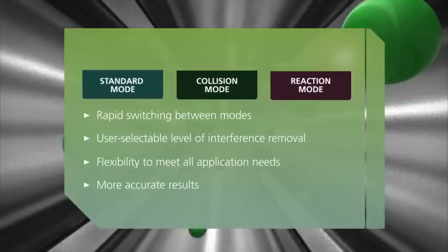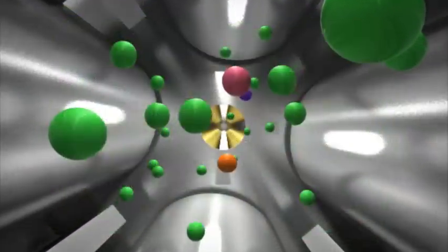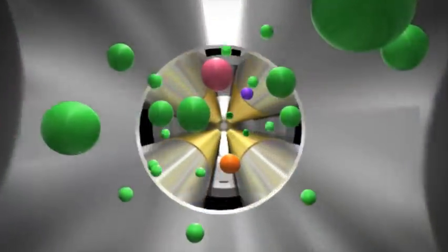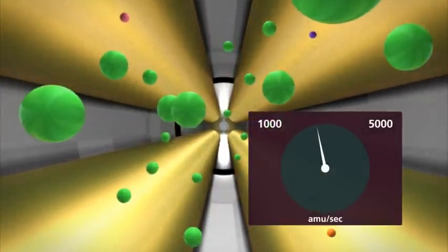No matter which approach you choose, the end result is a beam of analyte ions with few, if any, spectral interferences, leaving the universal cell and entering the world's fastest, most powerful analyzing quadrupole.